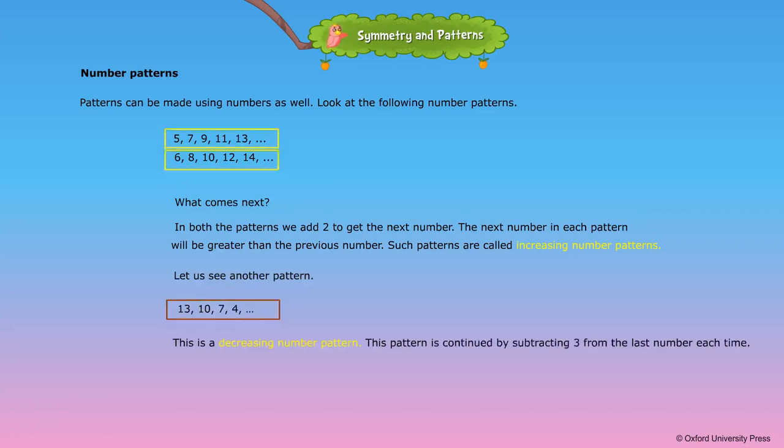Let us see another pattern: 13, 10, 7, 4 and so on. This is a decreasing number pattern. This pattern is continued by subtracting 3 from the last number each time.